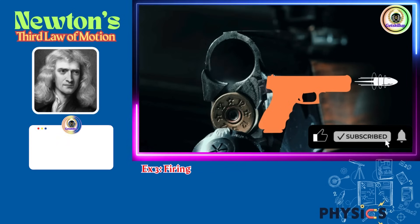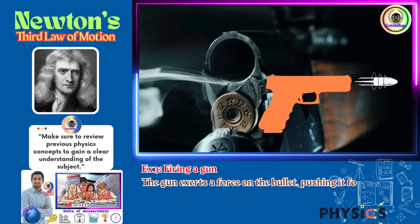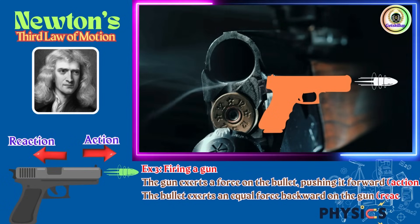Example 3: Firing a gun. The gun exerts a force on the bullet pushing it forward - action. The bullet exerts an equal force backward on the gun - reaction, causing recoil.